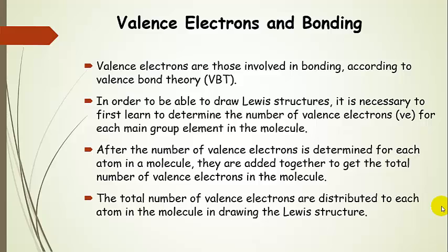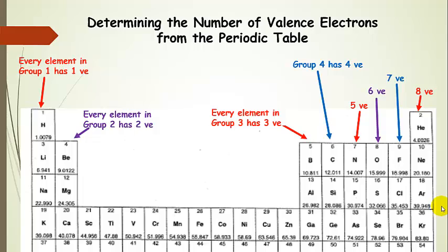We're going to focus on making sure that all of the atoms in the molecule have octets where possible. Here's a sample periodic table showing how to determine the number of valence electrons for different main group elements. Everything in group 1 has one valence electron — this should be a review, by the way. Every element in group 2 has two valence electrons. Then in group 3, three electrons; four valence electrons in group 4; five valence electrons in group 5. Just look at the group number or look at the column, and everything in that column is going to have that number of valence electrons.